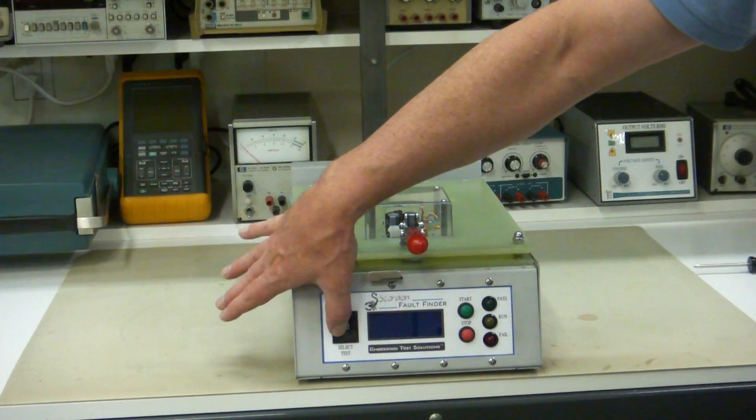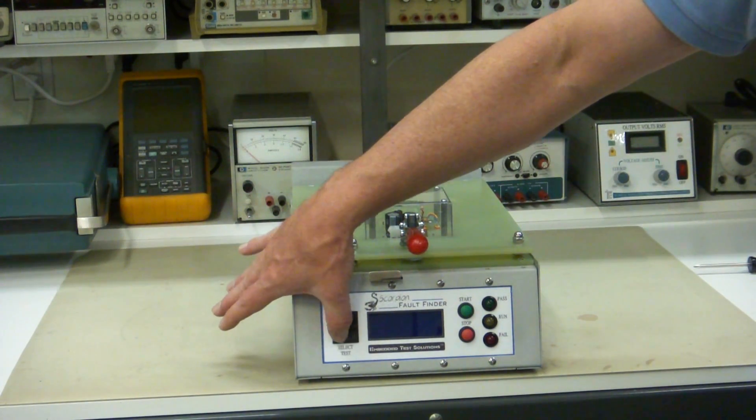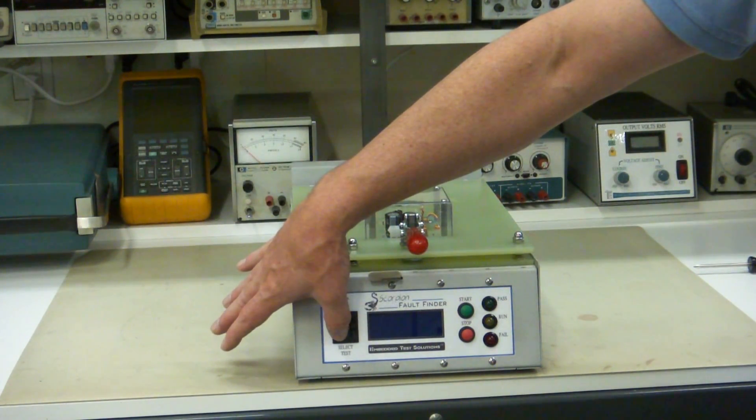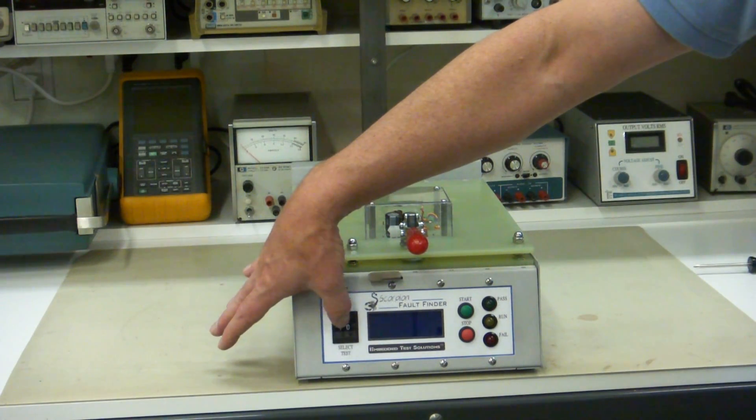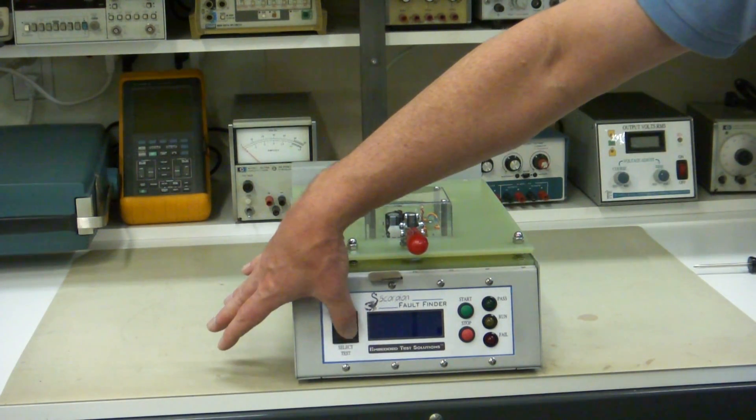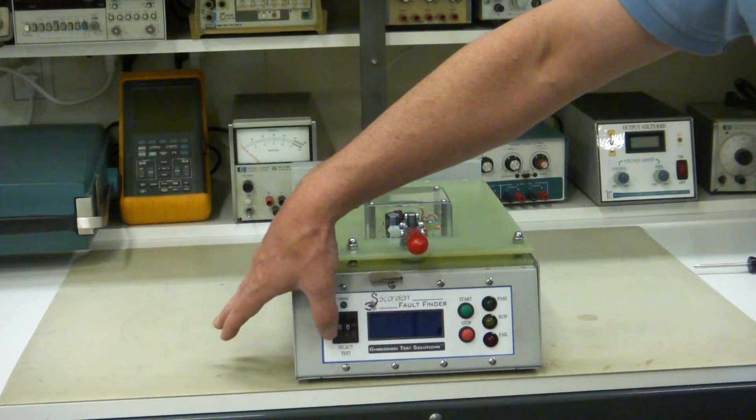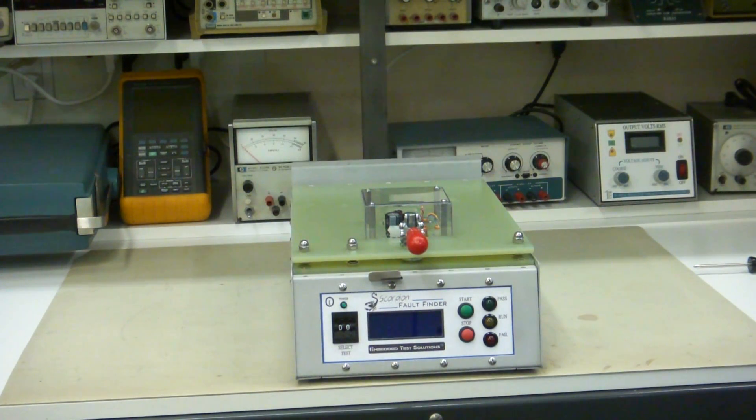And also over here we have a selector for running individual tests. You can set it to zero to run all the tests automatically or set it to run a specific test for troubleshooting. Any test from zero to 99 that you might have in there.